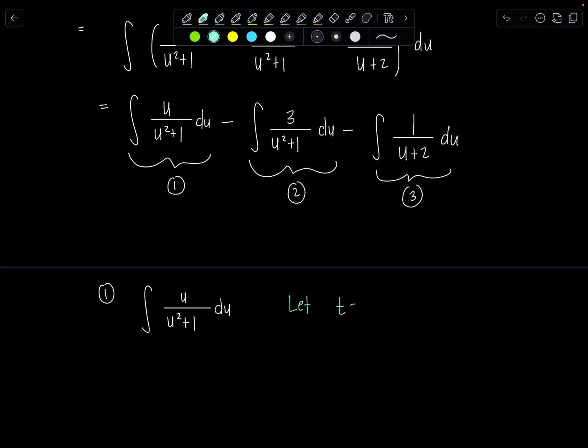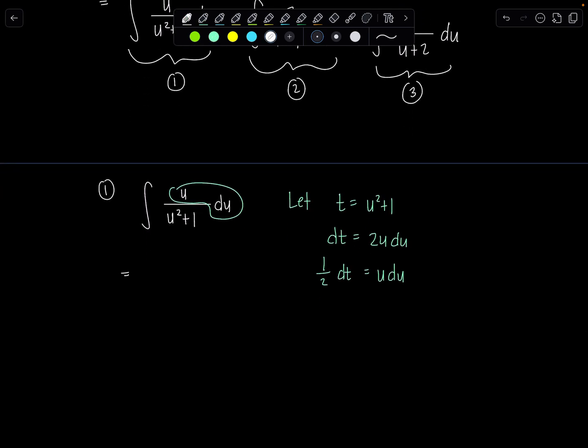And then dt is 2u du. Well all I have is u du. So 1 half dt is that u du. Great. And I can rewrite this now as one half integral dt over t. Beautiful.